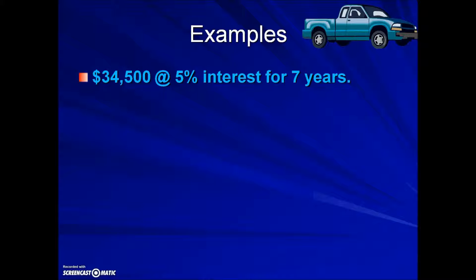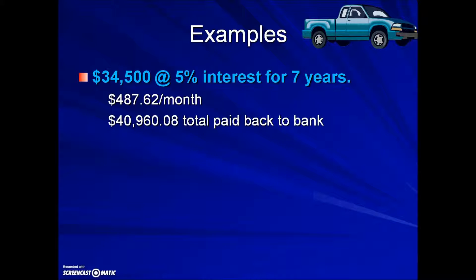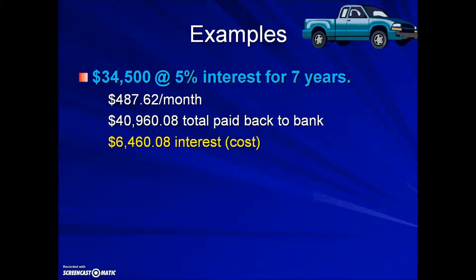In this example, we have an amount borrowed of $34,500 at 5% interest for seven years. The monthly payment is just under $500. After seven years of payments, they've paid almost $41,000. Comparing what was paid with what was borrowed, the interest or the cost is just under $6,500 above what was borrowed, which is approximately a fifth more, or about 20%.